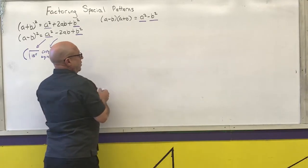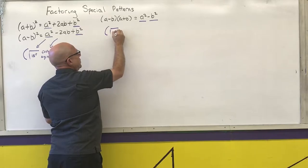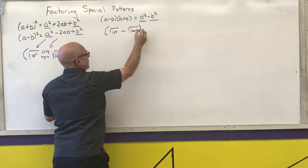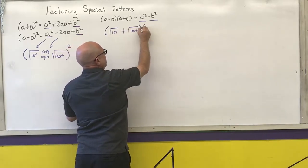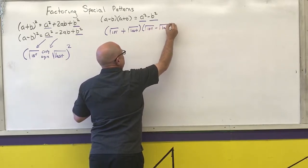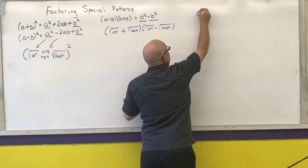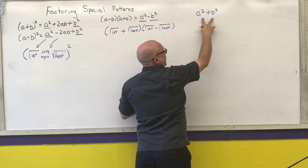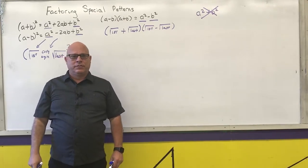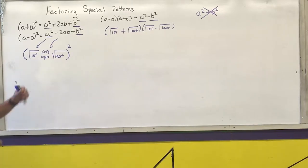If it's in the form a squared minus b squared, it's going to be the square root of the first plus the square root of the last, times the square root of the first minus the square root of the last. Notice I cannot — cannot at all — factor a sum of two squares. I cannot factor that. So what we are going to do is do some examples using these patterns.